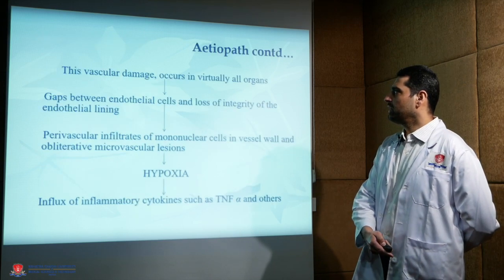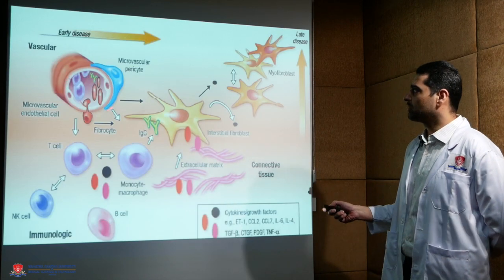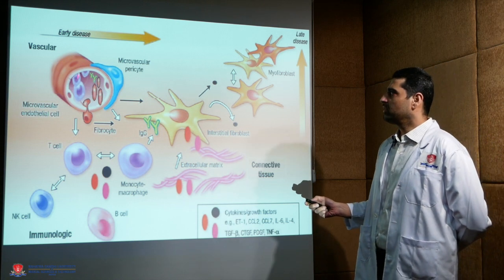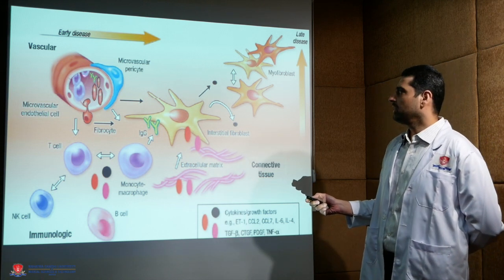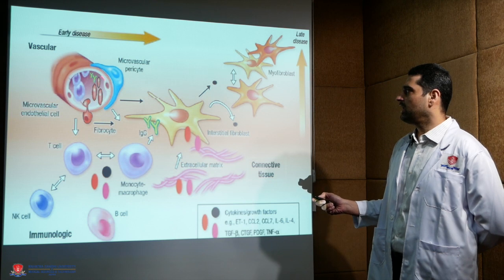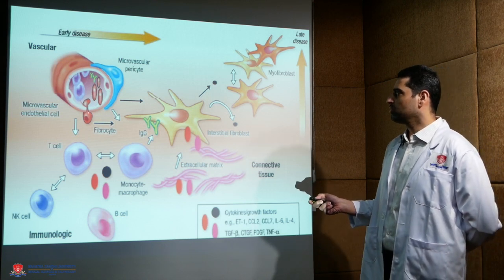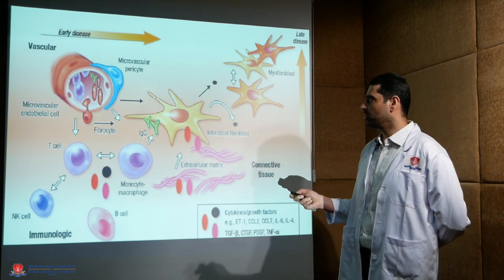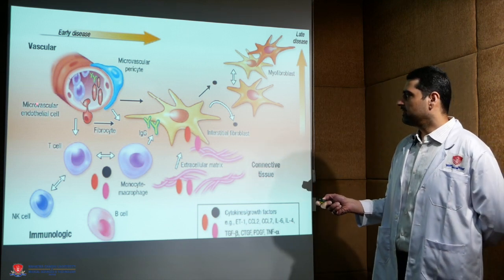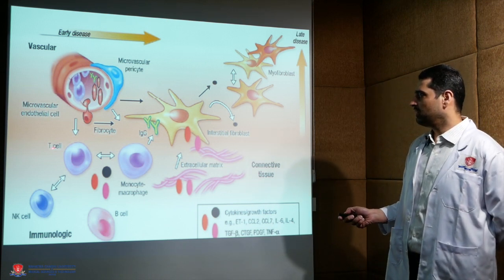Etiopathogenesis-wise, the earliest factor is the vascular one, where there is endothelial injury leading to breach in endothelial lining, and mononuclear cell infiltrate which leads to various cytokines release like Th1 type, leading to T cell stimulation.